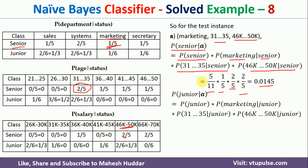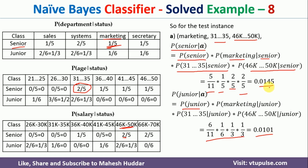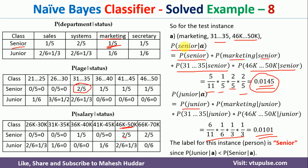Similarly, probability of junior given A equals probability of junior, multiplied by probability of marketing given junior, probability of 31-35 given junior, and probability of 46k to 50k given junior. Putting in all the values, we get 0.0101. Comparing 0.0145 and 0.0101, probability of senior given A is more, so the new example is classified as senior.